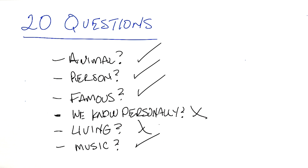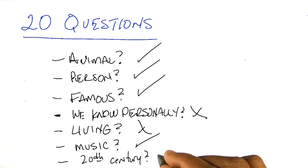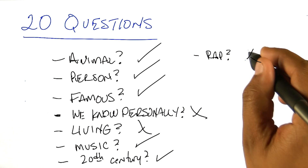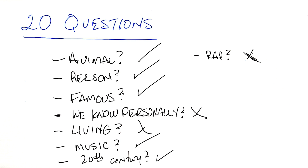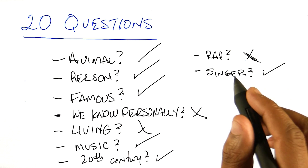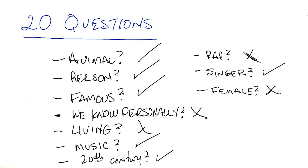So it's a dead famous person. Is the person famous for being in the music industry? The answer is yes. Did this person live during the 20th century? Yes. Is the genre of music associated with the person hip hop or rap? No. Is the person a singer? Yes. Is the person female? No. That's ten questions, Michael — the clock is ticking down, but I feel like I've narrowed it down quite a bit.